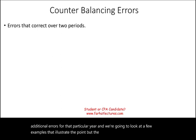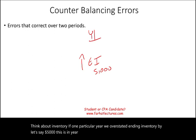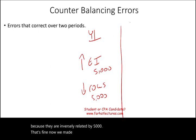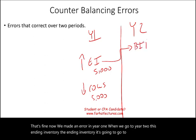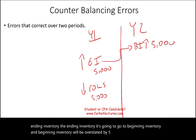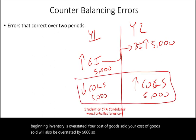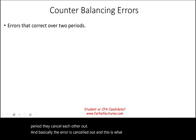The classic case is inventory. If in year one we overstated ending inventory by $5,000, that's going to reduce cost of goods sold by $5,000 because they are inversely related. When we go to year two, this ending inventory becomes beginning inventory, and beginning inventory will be overstated by $5,000. For year two, because beginning inventory is overstated, cost of goods sold will also be overstated by $5,000. Over the two-year period, they cancel each other out — the error is counterbalanced.